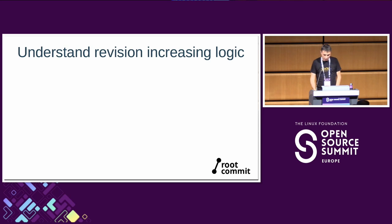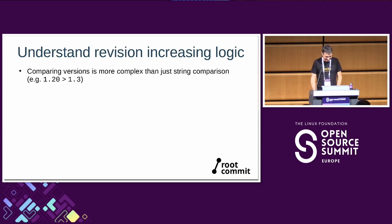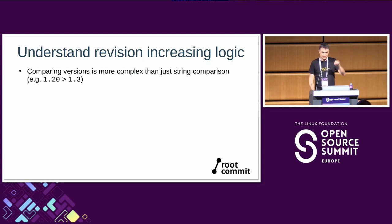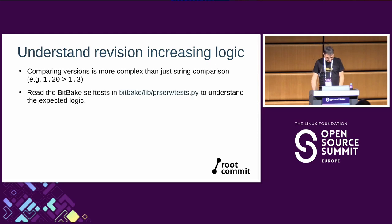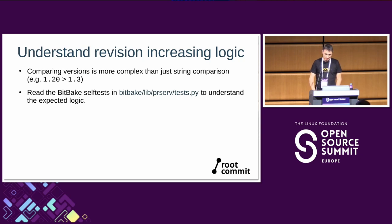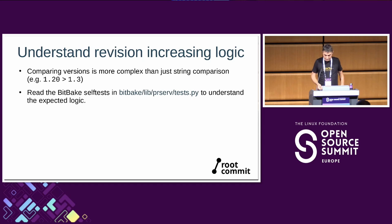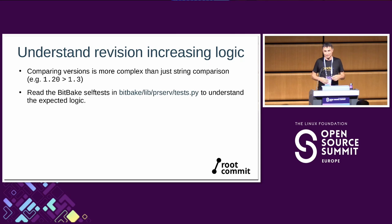To understand the revision increasing logic: for example, 20 is greater than 1.3. Revisions are compared with dots in between using a specific Python function. I developed ptests to check the PR server code, which was really handy during development of the PR server updates — I strongly recommend writing tests at the same time.